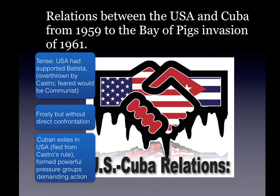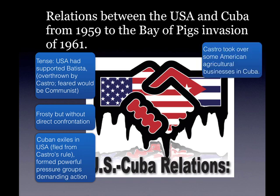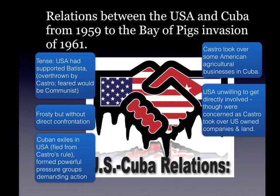Cuban exiles — people who had been part of Batista's regime or had powerful business interests overturned by the new regime — fled from Castro's rule and formed powerful pressure groups in the USA demanding action from the US government. Castro had also taken over some American agricultural businesses in Cuba, and the American business owners who had lost those businesses formed a powerful lobby group in Washington trying to persuade the USA to take a more direct line against Castro's regime.